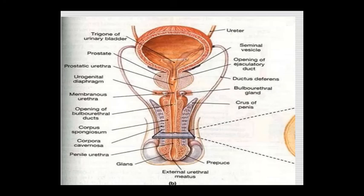This is the prostate and prostatic urethra, which can become narrowed. This condition is called benign prostatic hyperplasia, which shows narrowing of the urethra due to inflammation and enlargement of the prostate.